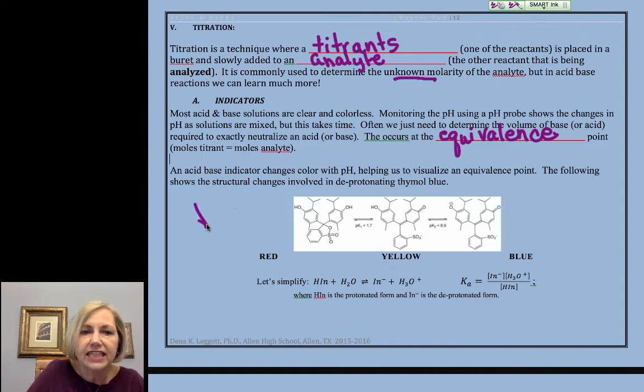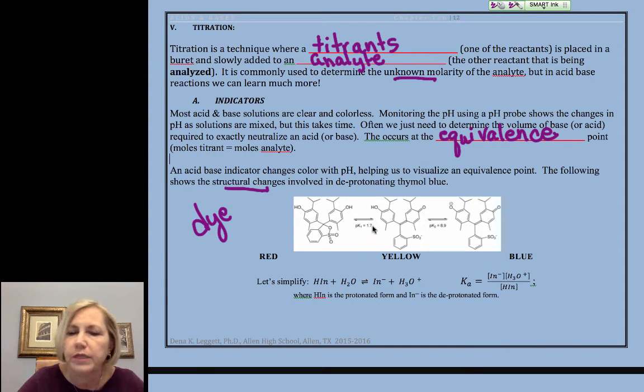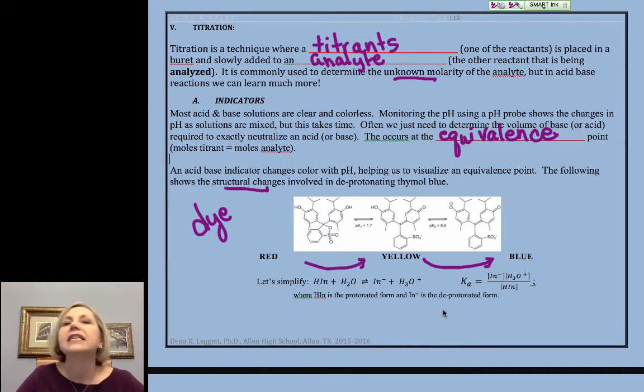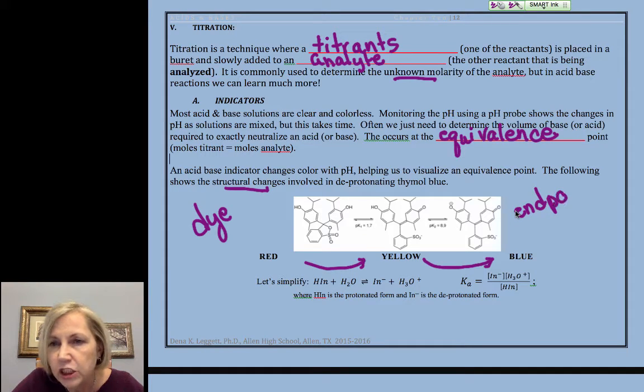Indicators are dyes that undergo structural changes. Remember, structure determines function when they are protonated and deprotonated. This is an example of thymol blue. It turns red to yellow at an acidic pH, and then it turns yellow to blue at a basic pH. So we can see, our eyes can visualize that color change. And when that happens, when we're able to visualize the color change, that's called the end point.